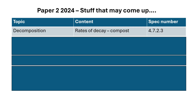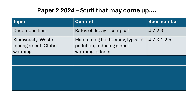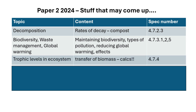Coming on to ecology: decomposition and the rates of decay — they like to talk about compost, so remember you need oxygen, water needs to be warm for decay, and bacteria and detritivores are important. Biodiversity, waste management, and global warming — it's quite a big topic. Any type of pollution could come up, as well as the effects of global warming.